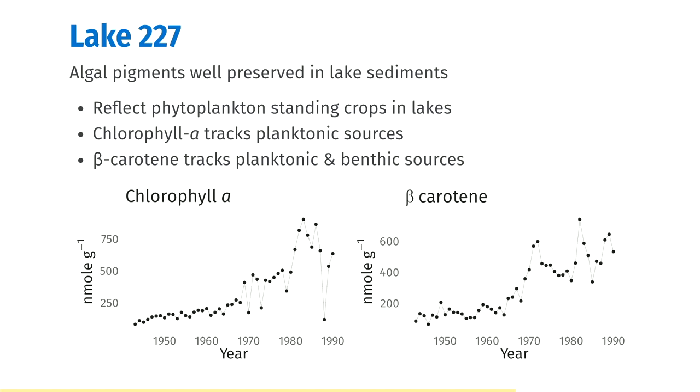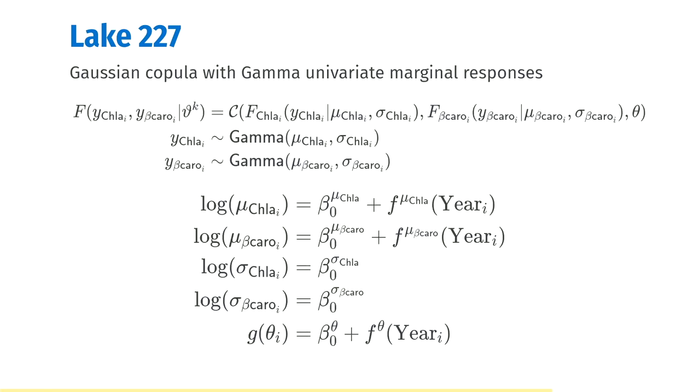Both of these are tending to increase over time, but we're interested in knowing how these two things are correlated, because that might suggest changes in the relative sources from planktonic and benthic. We're going to model these using a Gaussian copula with gamma univariate marginal responses — gamma because these are positive continuous variables.